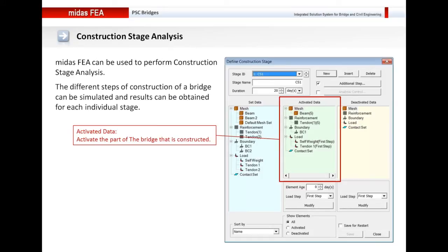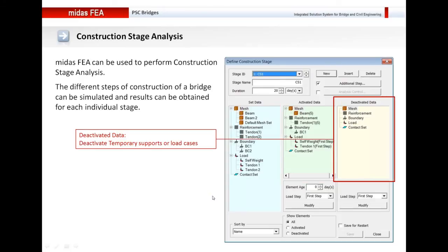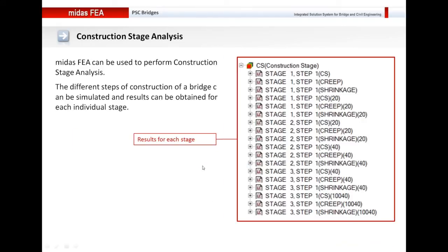Midas FEA can also be used to perform construction stage analysis. If you are constructing the bridge in separate stress stages and want to take into account the stress history of the bridge, you can perform construction stage analysis. The define construction stage dialog box in Midas FEA has been made even more user-friendly — we have put the elements, reinforcement, boundary, load, and contact elements all under the same dialog box, so you can easily see what is activated in a particular stage.